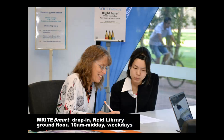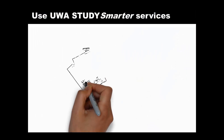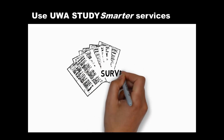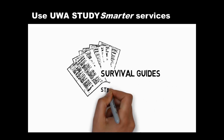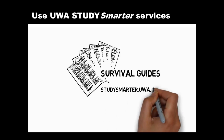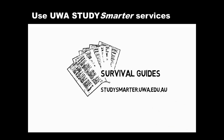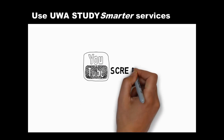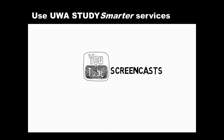If you're a UWA student, you can access free, friendly, expert advice on writing from Siri and colleagues from Study Smarter, and fantastic assistance developing referencing skills from Graham and the other UWA Information Services librarians. You can also access one-page survival guides on referencing, writing, and research topics at Write Smart Drop-ins, from displays in the library, or on our website. Check out our other YouTube videos to help you with your study. Good luck with your referencing, and we hope to see you soon.